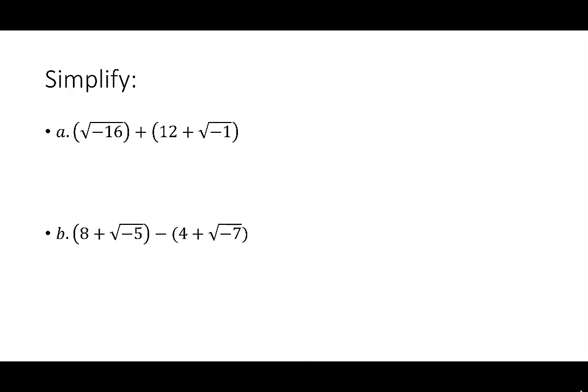Let's try two more. My first problem says the square root of negative 16 plus 12 plus the square root of negative 1. We know the square root of negative 16 is 4i. 12 plus the square root of negative 1 is 12 plus i. When I write my final solution in standard form, I want to put the real part first. In my first number I just have 4i — the real part is 0. So if I think about 0 plus 12, I get 12 as my real part. Then 4i plus 1i gives me 5i.